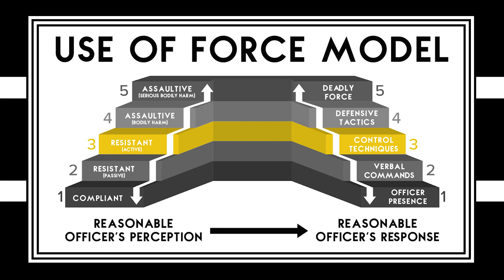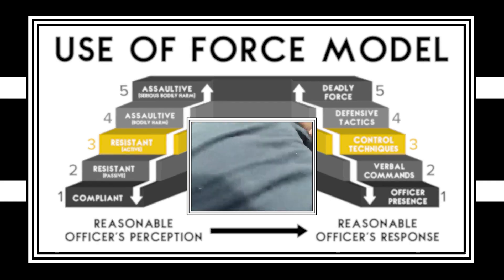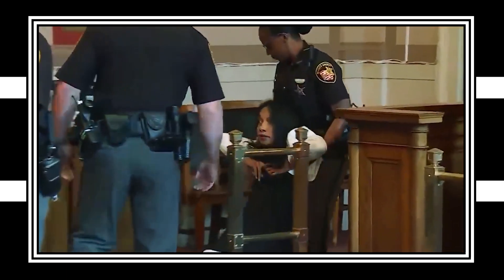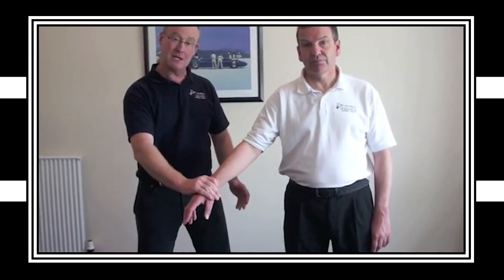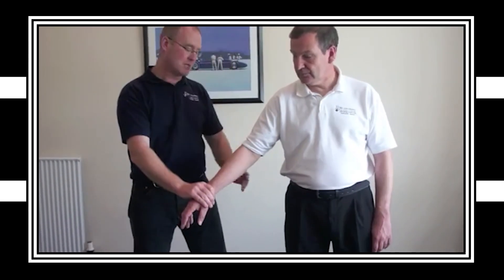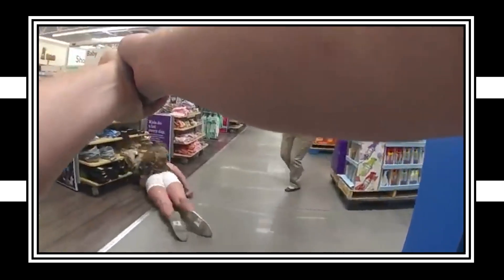On level three, this is where things might start to change depending on the agency. The subject is starting to become a bit more aggressive — they're starting to pull away, or they might try to be static, where they just drop their body weight. The officer is going to respond by using certain types of control techniques, where they might have one hand on their wrist, another hand on their tricep, called an escort technique. At this level, they might also be able to use pepper spray or a taser, and these are still less than lethal options.